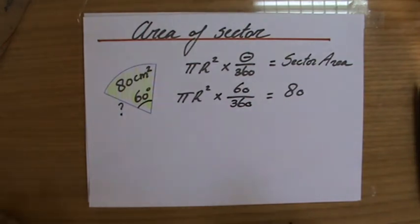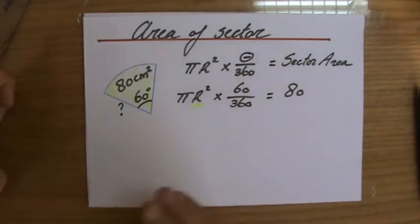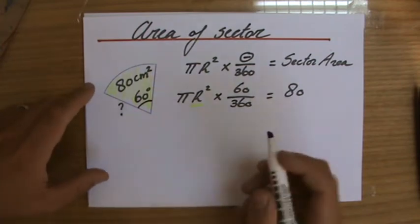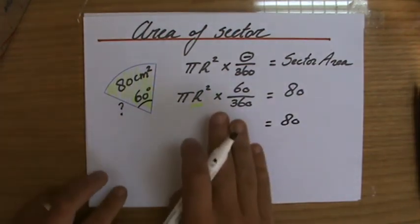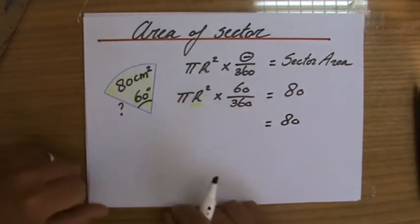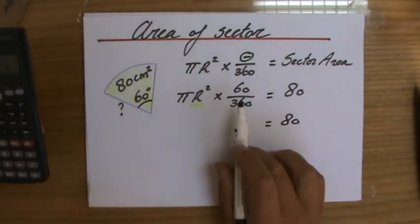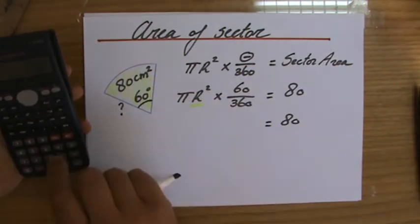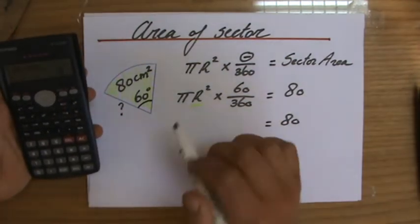I have this one equation and how many unknowns do I have? It's only r, so I can solve it. One equation, one unknown, that shouldn't be a problem. There are many ways that you can do this. Let's work this out - 60 out of 360, that is 1 over 6, your calculator can give that to you, that's one sixth.